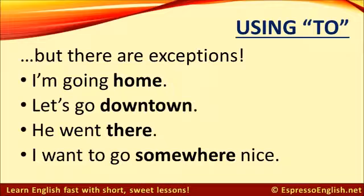But there are exceptions with the words home, downtown, there, and somewhere. For example: I'm going home. Let's go downtown. He went there. I want to go somewhere nice. You can see that we don't use 'to' with these words.